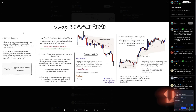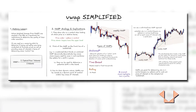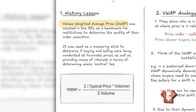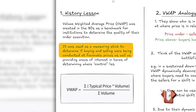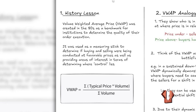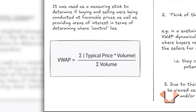Here is an image I created around October 2024 — I'll be breaking these down using videos. Quick history lesson: VWAP stands for Volume Weighted Average Price. They were created in the 80s as a benchmark for institutions to determine the quality of their order execution — basically a measuring stick to determine if buying or selling was conducted at favorable prices. The formula is straightforward: VWAP is the summation of price times volume, divided by the summation of volume.